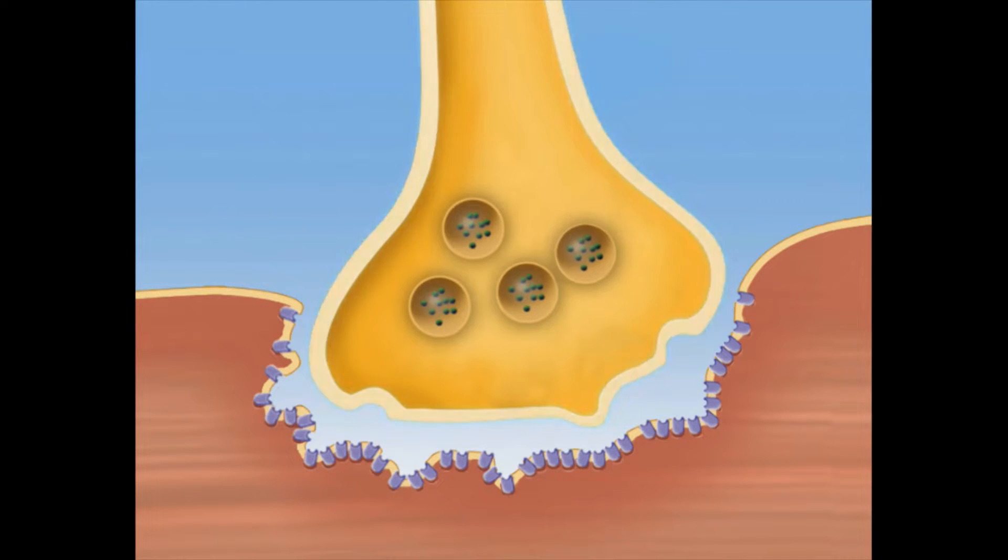In response to an action potential, a motor neuron releases acetylcholine. Acetylcholine crosses the synaptic cleft and binds to receptors on the plasma lemma.